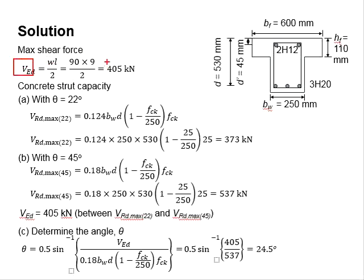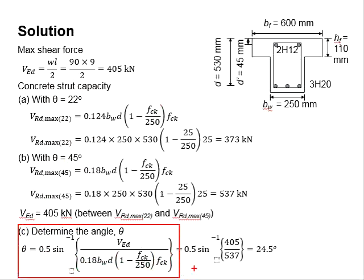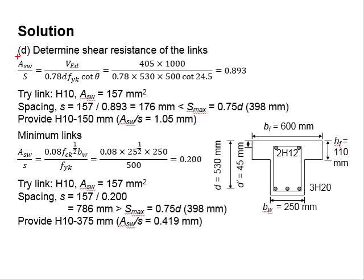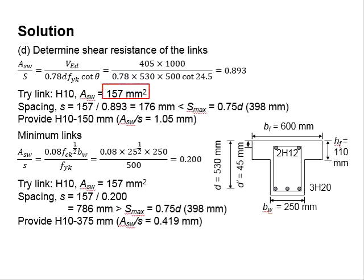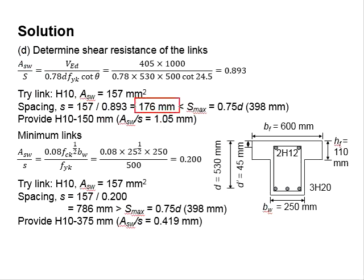The shear load of 405 kN is found to be between the two limiting values, so we know the shear angle will be between 22 and 45 degrees. Using the relevant equations, the shear angle is found to be 24.5 degrees. Applying the equations to determine the amount of shear reinforcement, we obtain a ratio of Asw divided by spacing equal to 0.893. Assuming H10 links are used, the area of reinforcement is 157 mm², giving a required spacing of 176 mm.